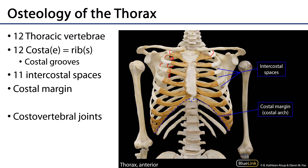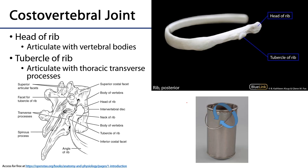The region where these ribs articulate with vertebrae is known as the costovertebral joints. Here is a posterior view of a rib — there's the head of the rib, a neck of the rib, and just towards the end there's a tubercle associated with the neck of the rib.